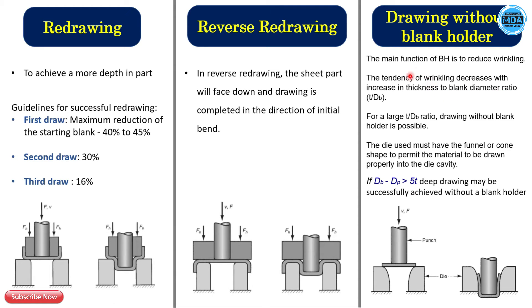We can reduce wrinkling defects by increasing the thickness-to-blank-diameter ratio. For a large thickness-to-blank-diameter ratio, drawing without a blank holder is possible. At that point, we need the thickness-to-blank-diameter ratio to be larger so that we can perform the drawing operation without a holder. It is similar to the drawing operation, but here we are not using the blank holder.